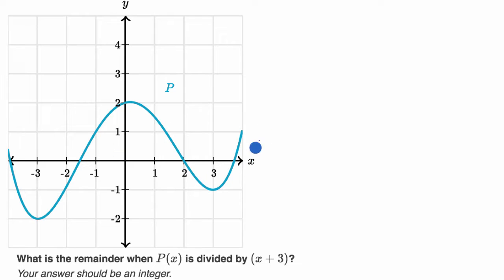We have the graph here of y equals P(x). They say, what is the remainder when P(x) is divided by x plus three? Pause this video and see if you can have a go at this. They tell us your answer should be an integer.